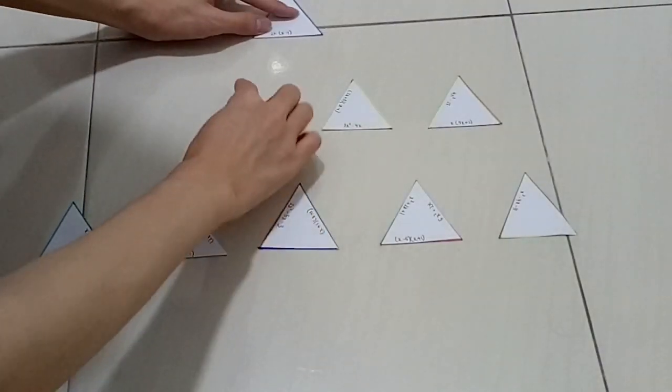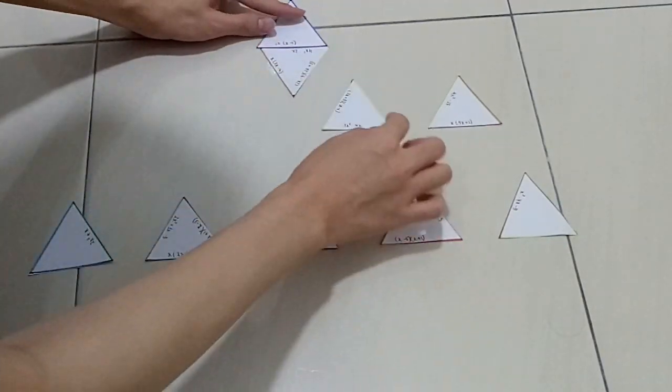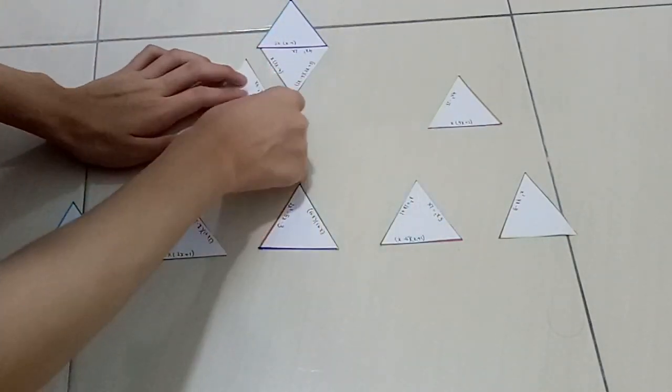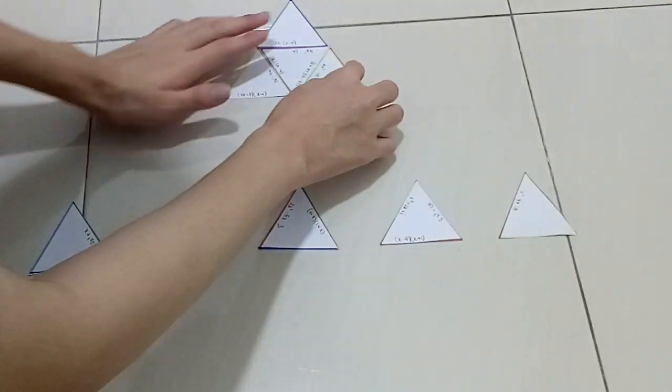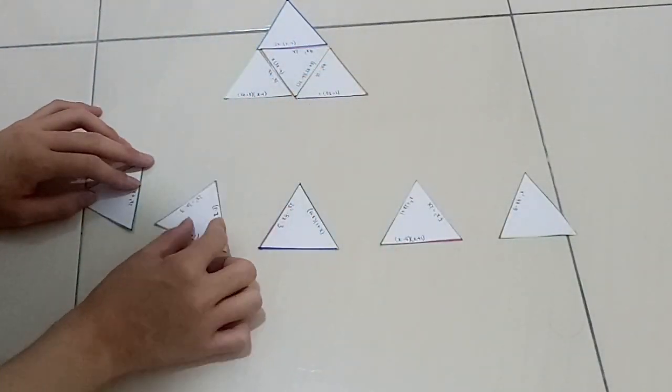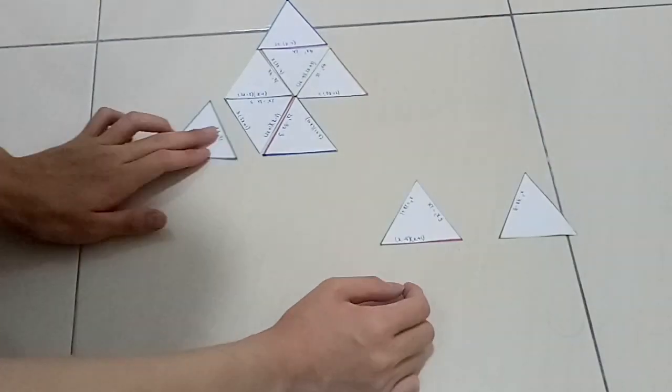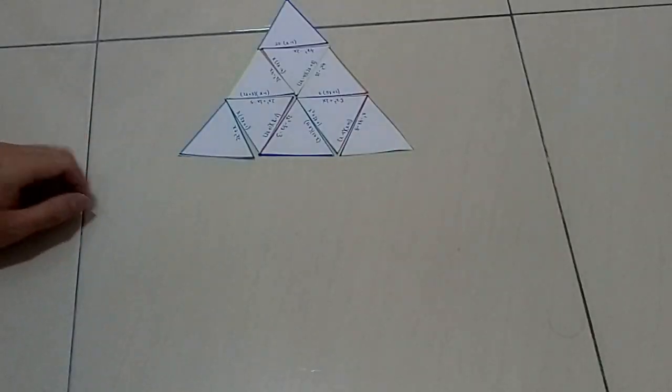Now, you merge the triangles together according to their questions and answers, just like this. Lastly, the triangle is formed.